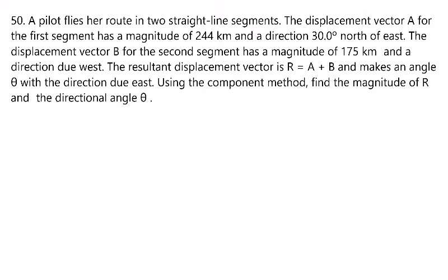Displacement vector A for the first segment is 244 kilometers, 30 degrees north of east. The second one is 175 kilometers direction due west. And we're trying to find the resultant displacement, which is really the sum of these two. When we write that, remember, these are all vectors, so you technically have little arrows on top. We're not talking about just addition. So to do this, we need to draw this out.